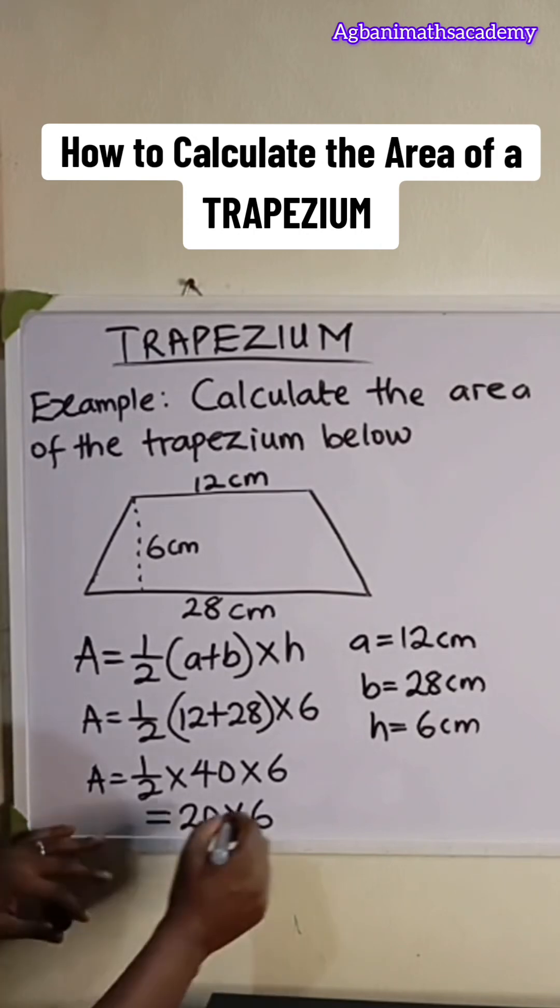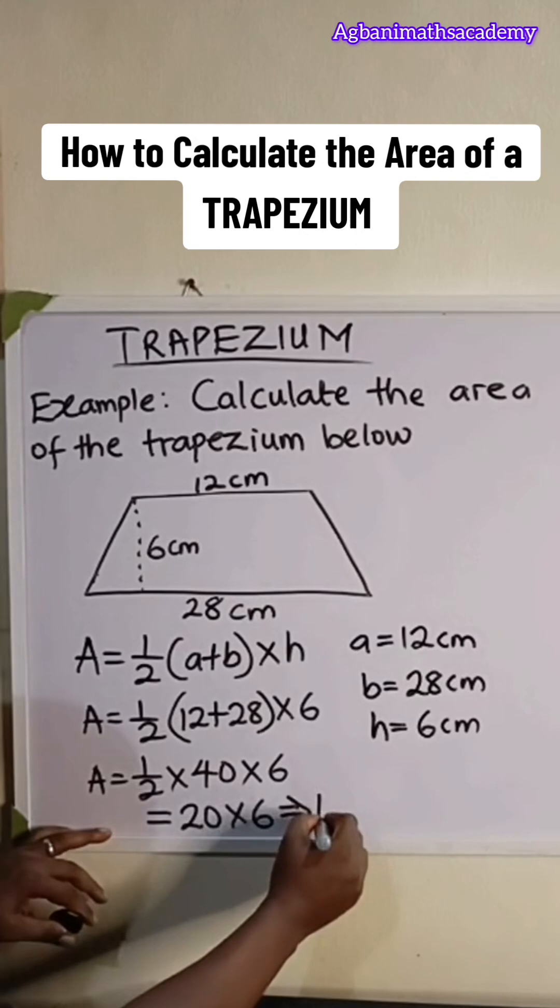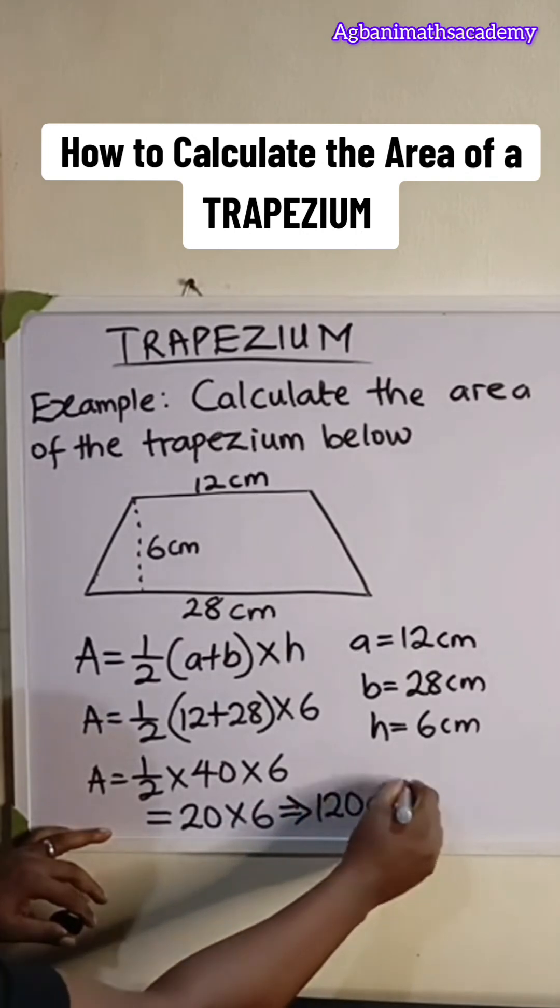Is going to give us 120. So the area of this trapezium is 120 centimeter square. That's the area of this trapezium.